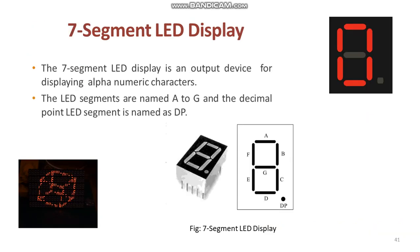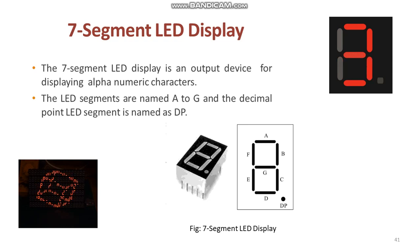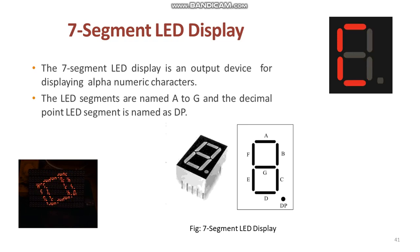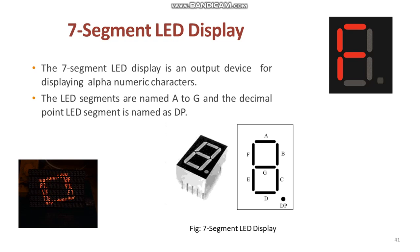The next one is the seven segment LED display, which is an output device for displaying alphanumeric characters. It contains seven LED segments, A to G, arranged in a special form used for displaying alphanumeric characters, and one LED used for representing the decimal point in the decimal number display, which is named as DP. The LED segments A to G and DP should be lit according to the display numbers and characters.